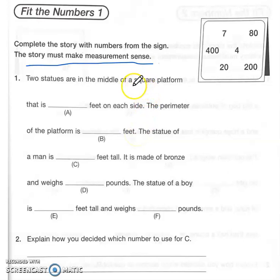Okay, so let's use some clues here. It's a square platform, right? And we all know that a square has equal sides, four equal sides to be exact.